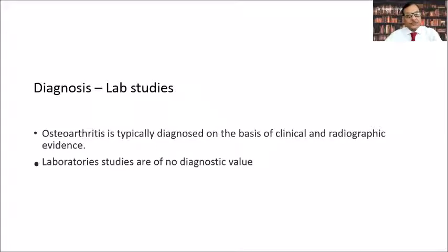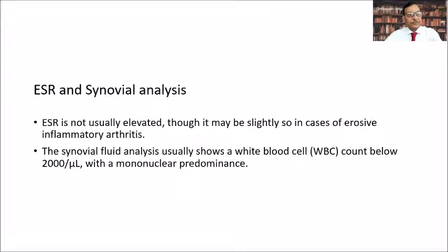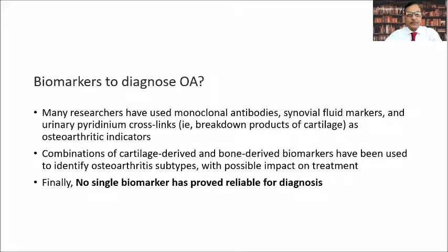Lab studies are usually of hardly any value. The diagnosis is based mainly on clinical and radiographic evidence. ESR is usually not elevated and synovial analysis is typical of OA — WBC count will be less than 2000 with mononuclear predominance. There is no single biomarker which has proved reliable for diagnosis.